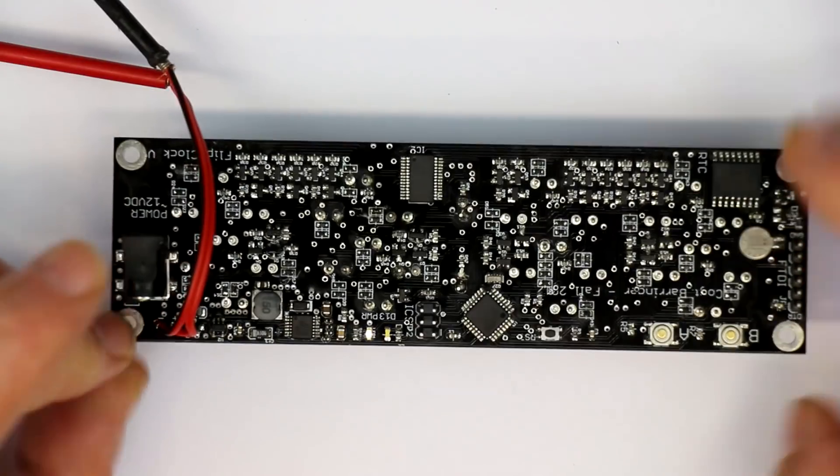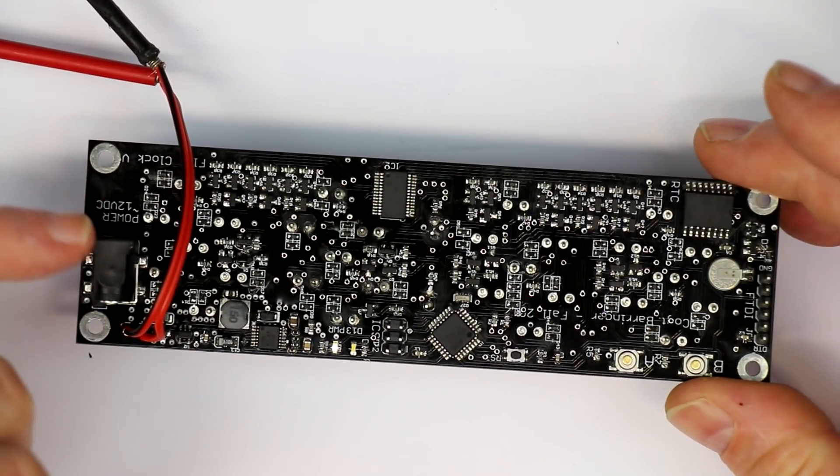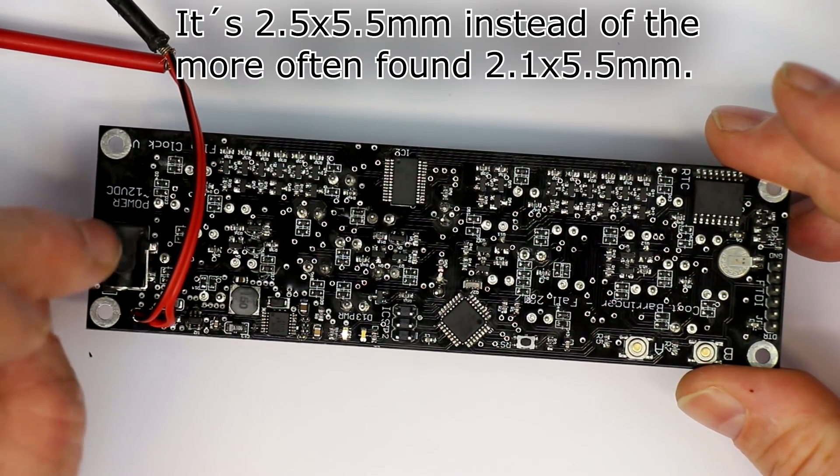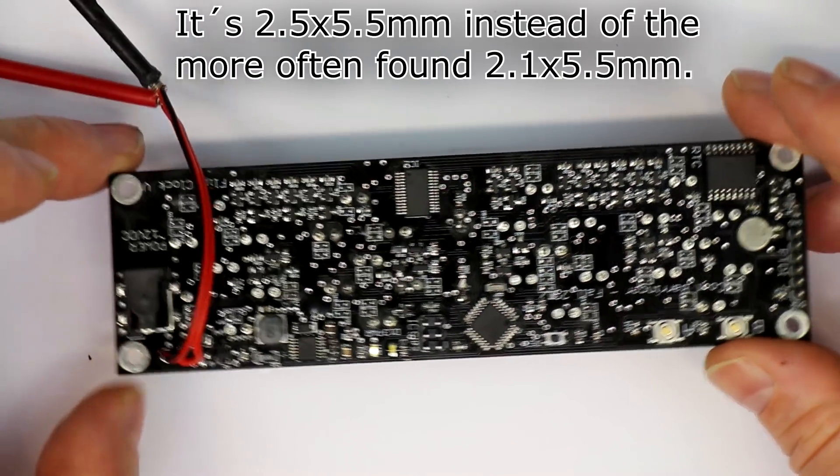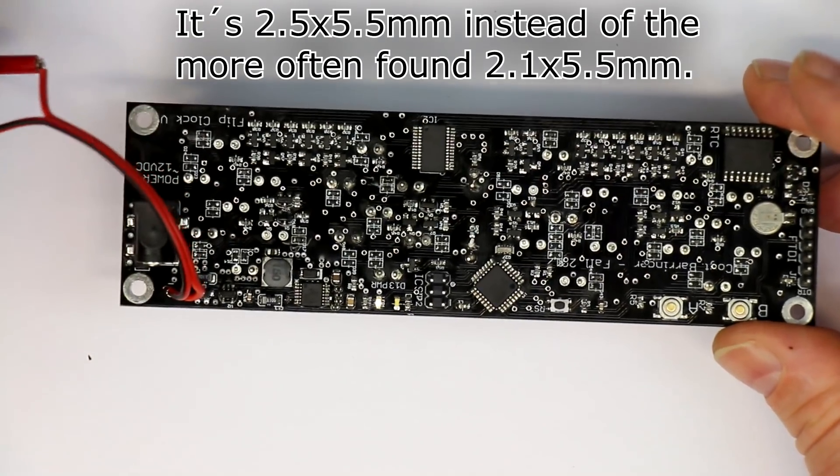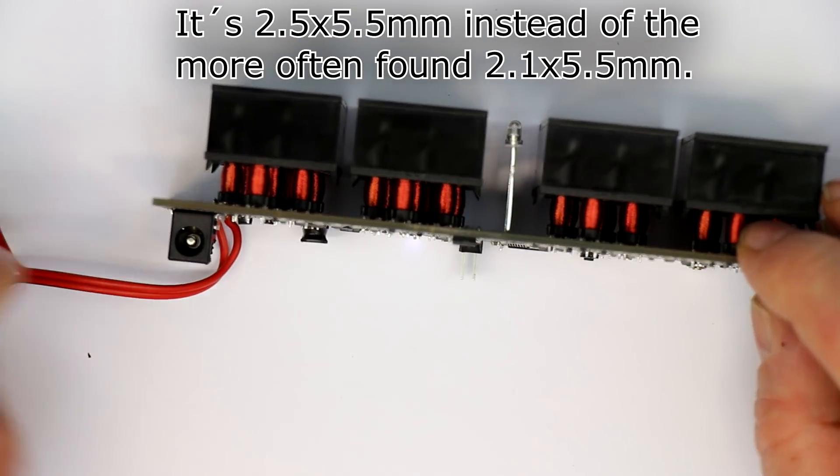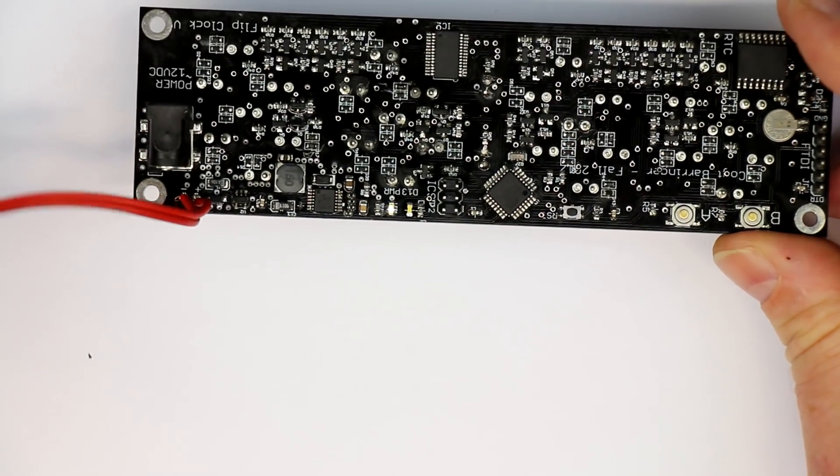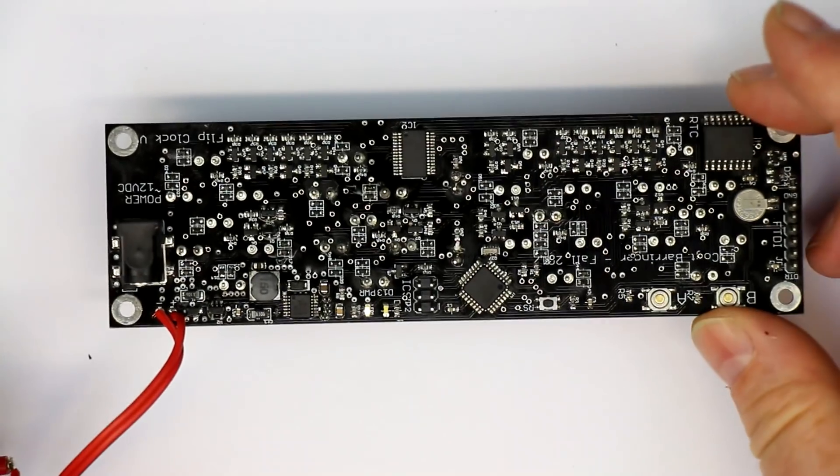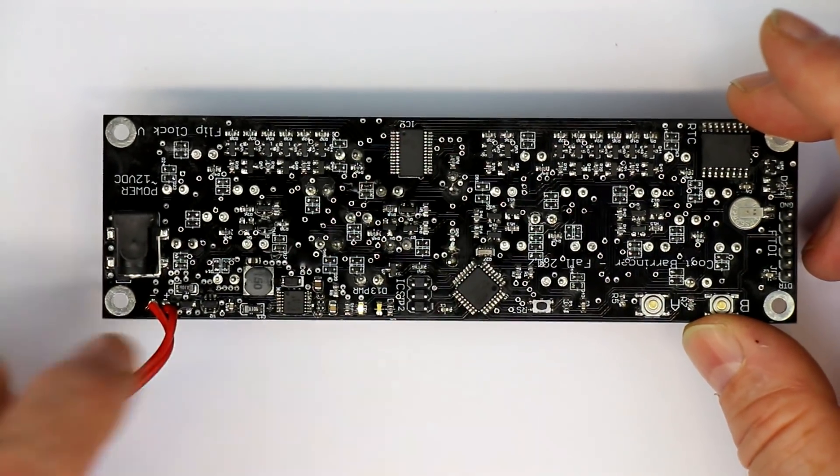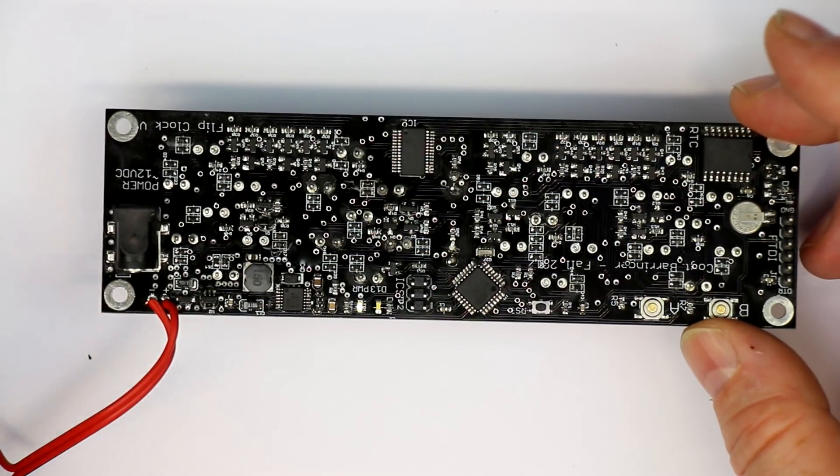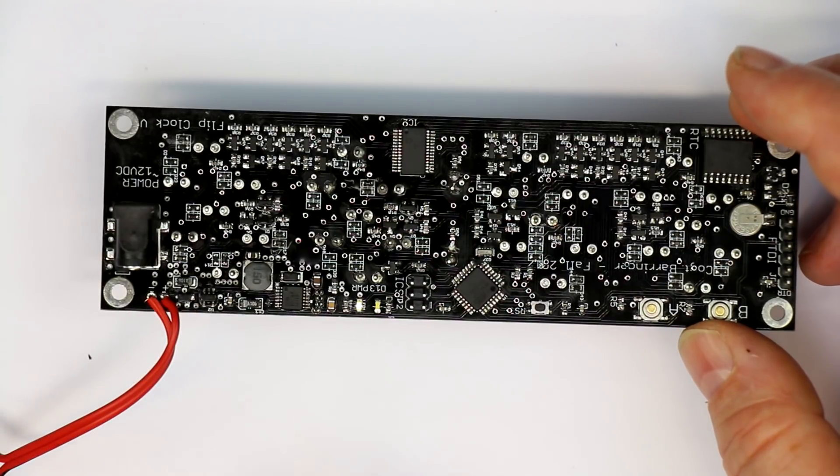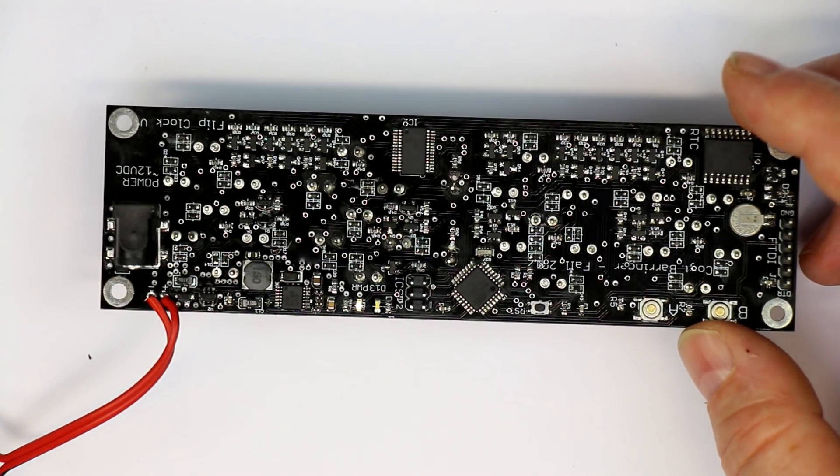I think Kroit himself was not very happy with this barrel type jack here because it doesn't have the standard size. So none of my wall warts was fitting. You have as an alternative, you can just as I did solder some wires here directly. Interchanging or mixing up plus and minus is no problem because there's a reverse protection diode inside.